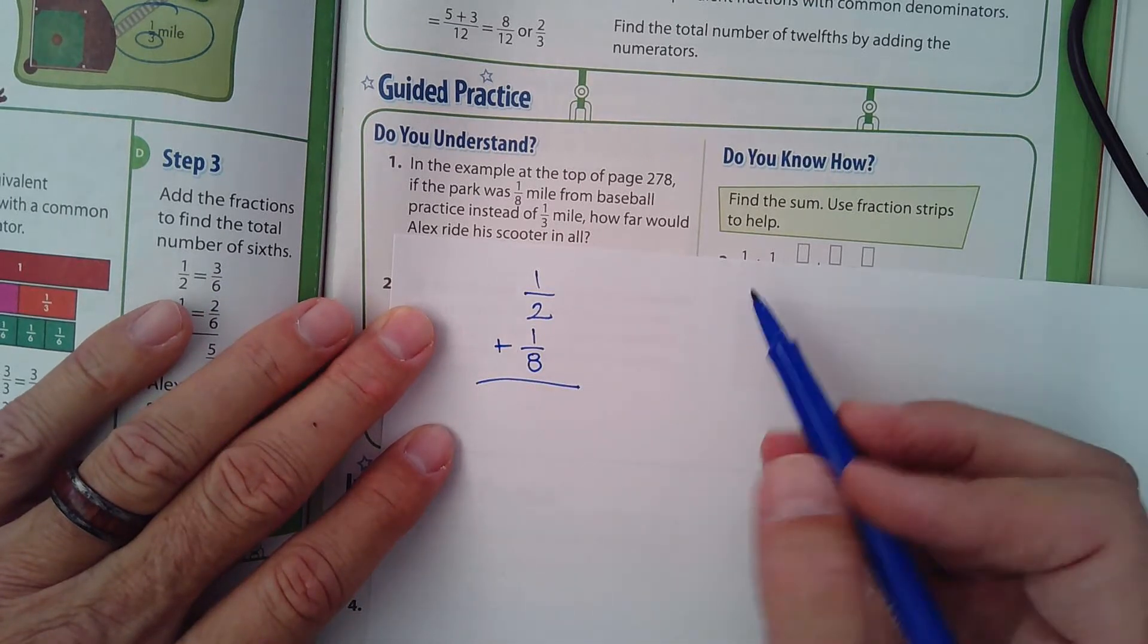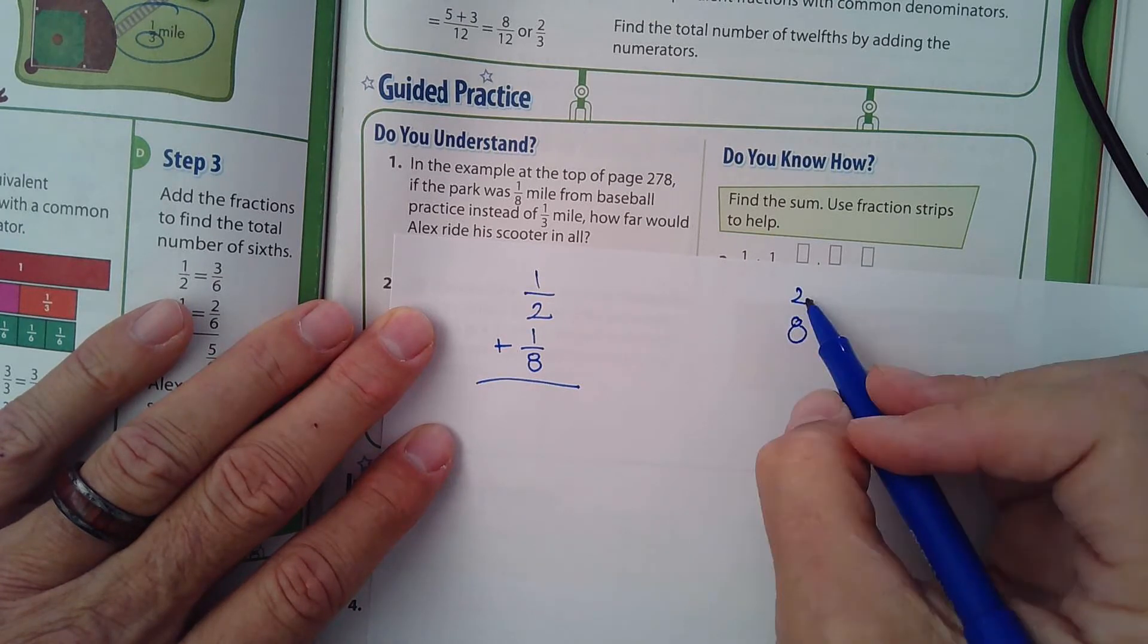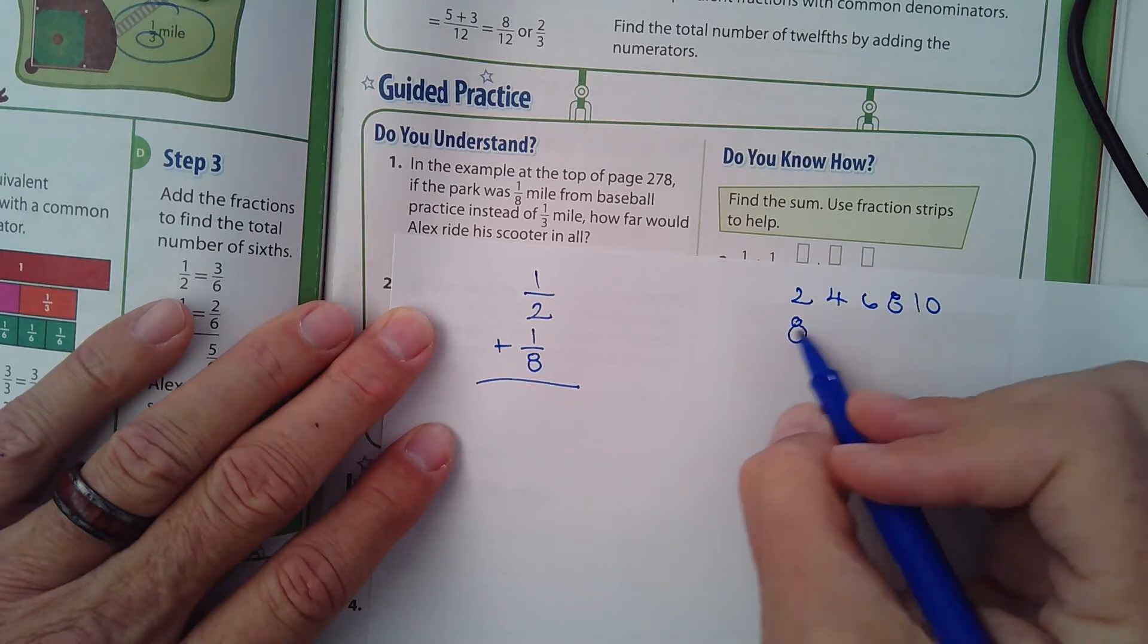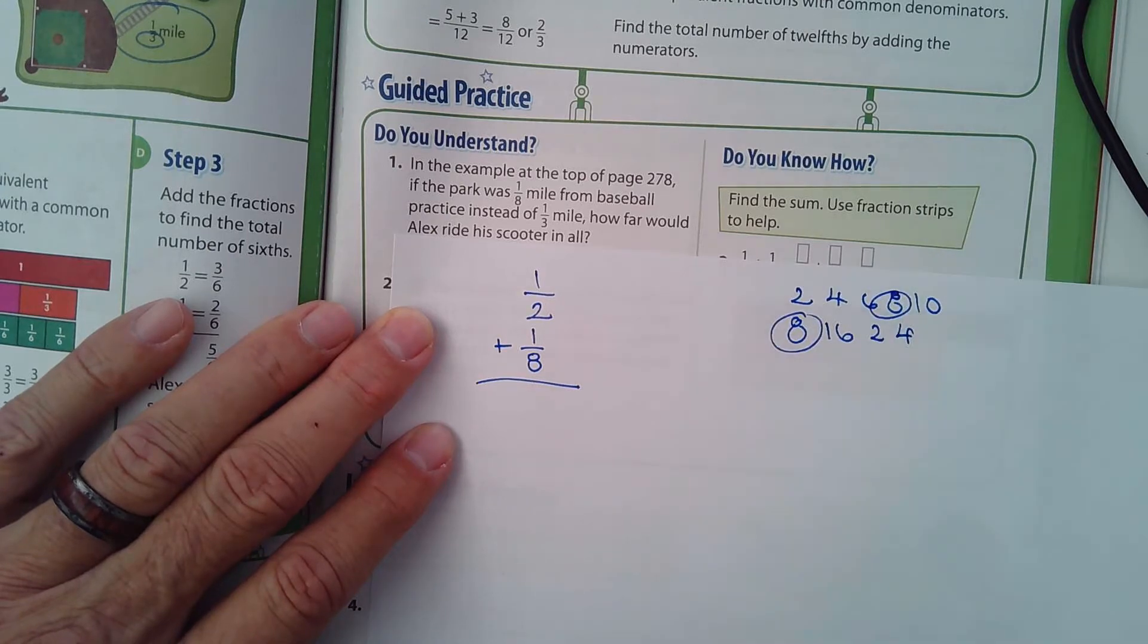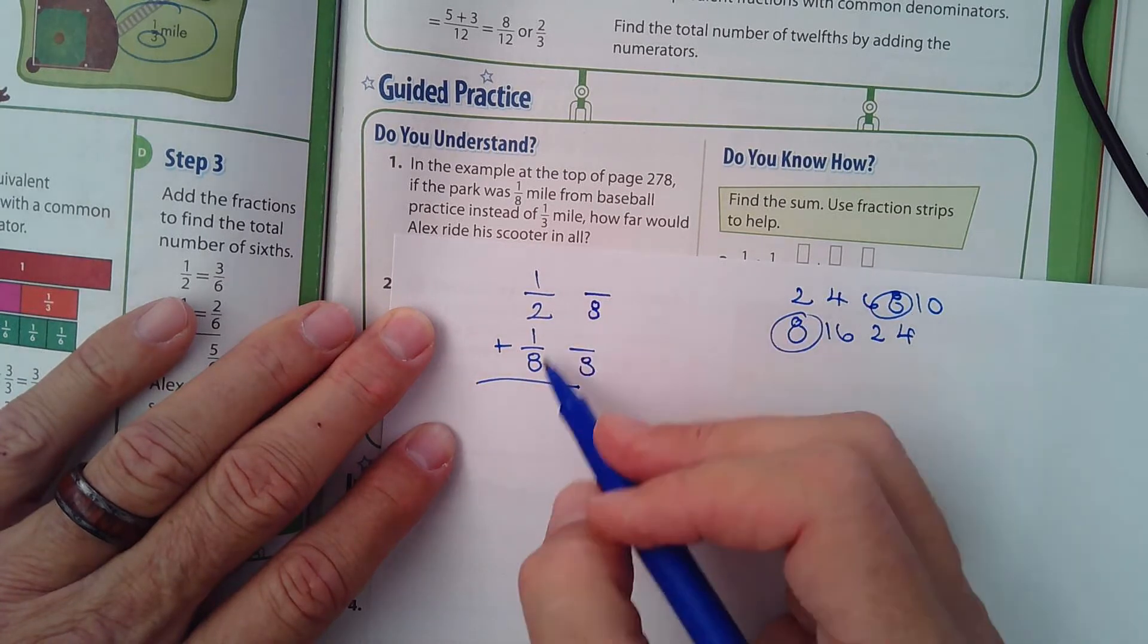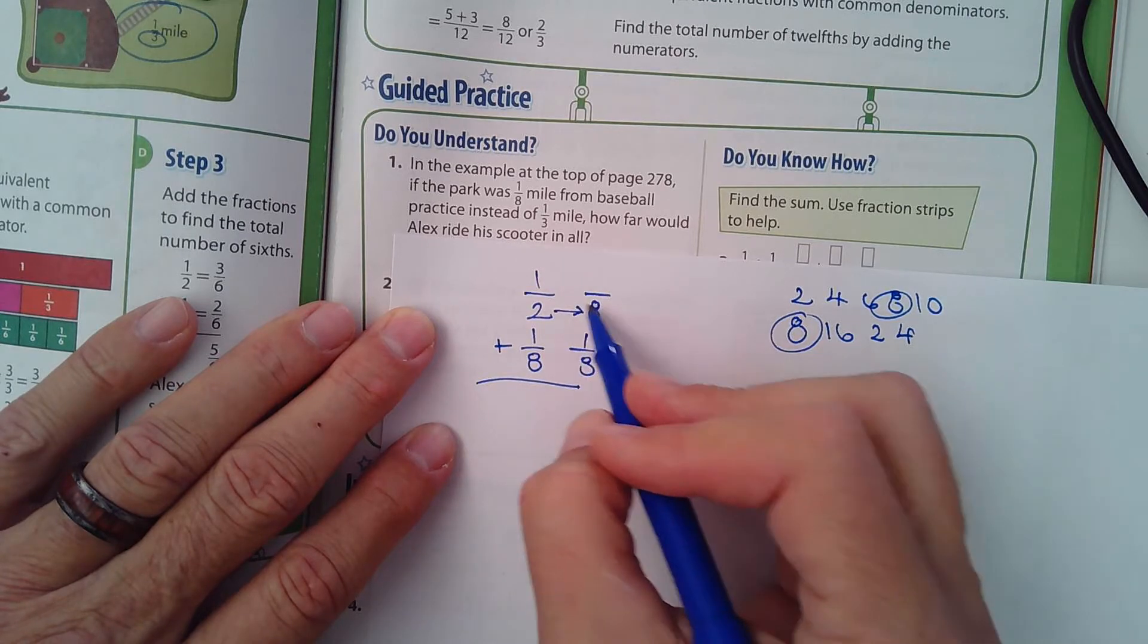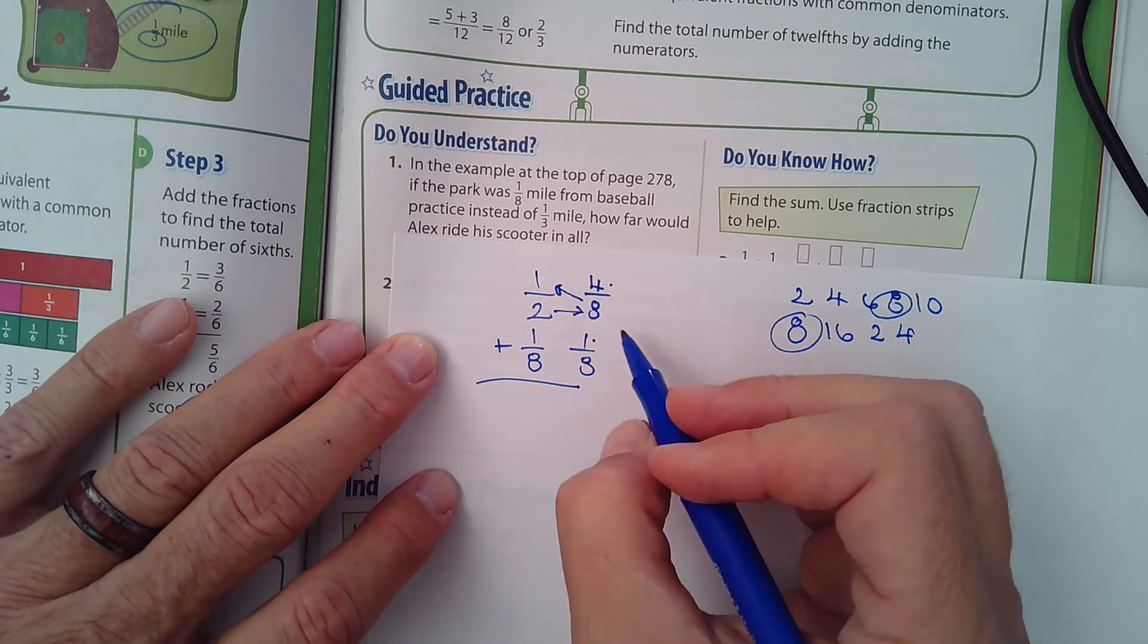I need to find a common denominator, a number that both 2 and 8 will fit into. I could do multiples of 2 and 8 and try to find it that way: 2, 4, 6, 8, 10. What are multiples of 8? Well, 8 itself, and then 16 and 24. But you should see the match there—it's an 8, so 8 we can use as the common denominator. That stays one-eighth. Two goes into 8 four times, 4 times 1 is 4.